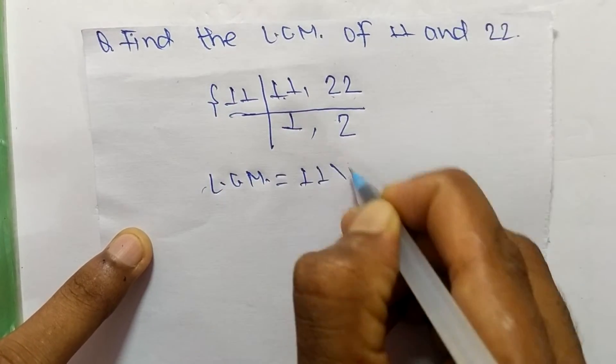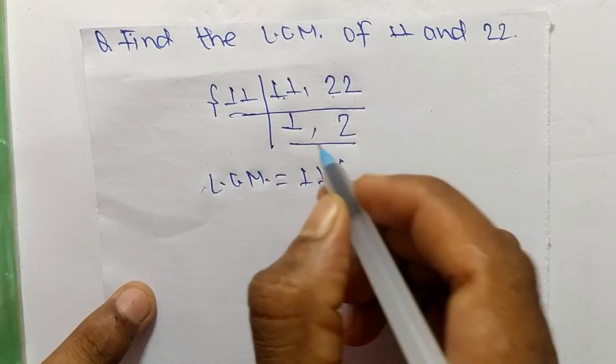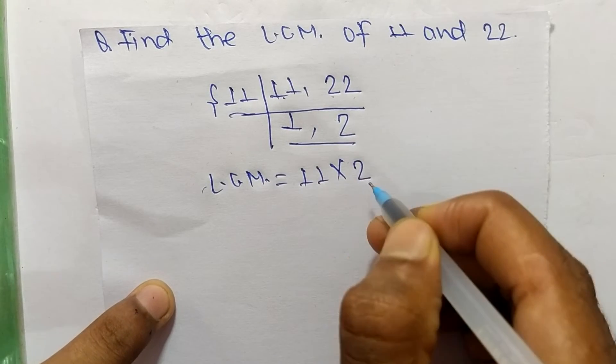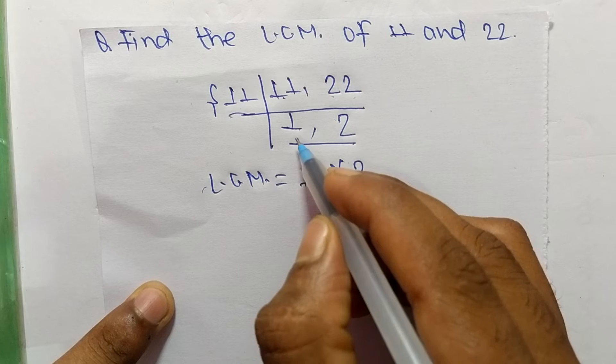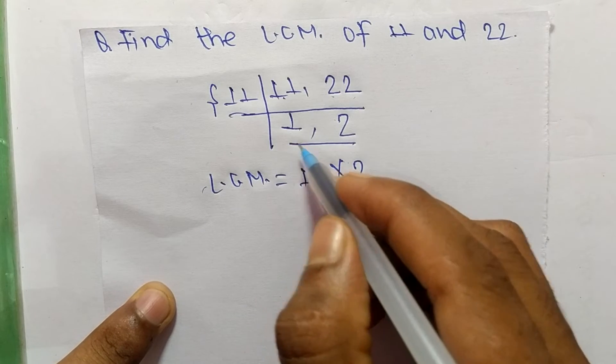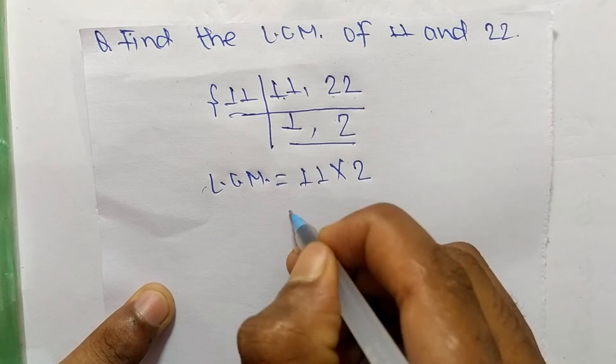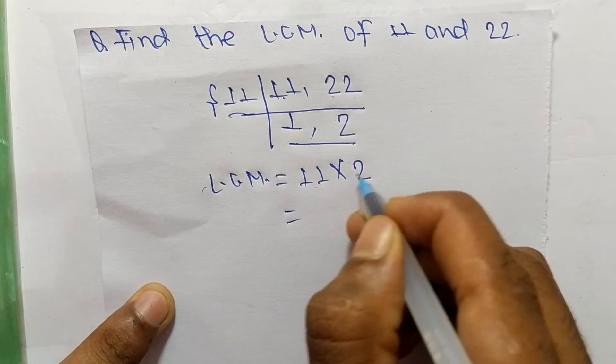So the LCM is equal to from this part it is 11 and from this part we have 1 and 2, but we take here only 2 and we neglect 1 because by multiplying any number with 1 we get the same result. So 11 times 2 means it is 22.